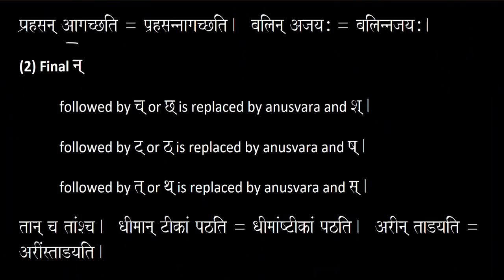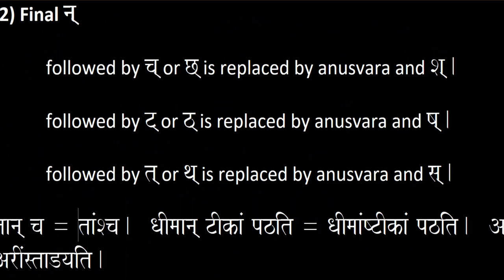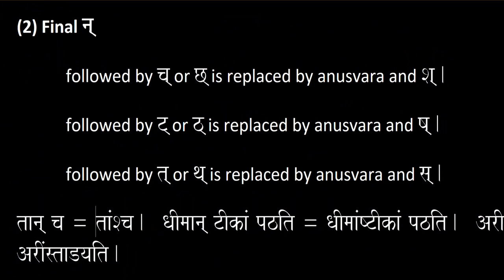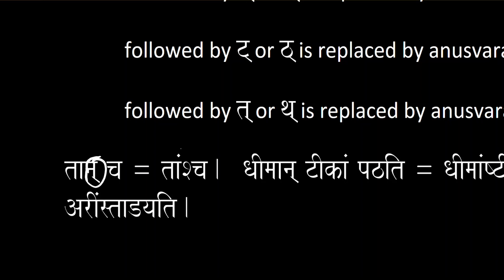The final na followed by a cha or cha is replaced by anusvara and sha. So for example, 'taan cha' is going to become 'taan sh cha' — this na is replaced by anusvara, and then a cha is also added.